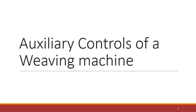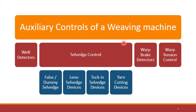We will primarily focus on the warp detectors, the warp breakage and how a machine can detect warp breakage. Then we will see the different types of salvage controls and we will also see the warp tension and warp breakage control, how we control them on the machine. On this slide you can see the summary of different types of auxiliary motions that we want to talk about in this lecture.